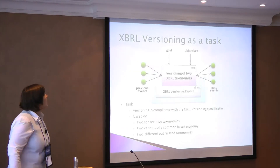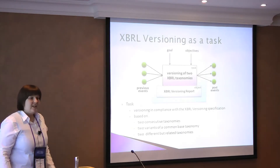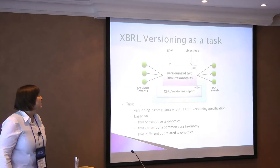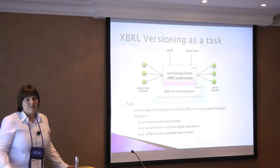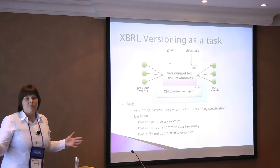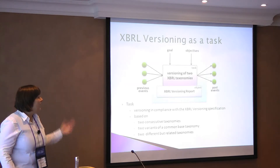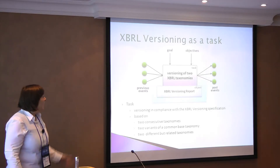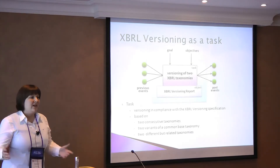From the expert versioning point of view, the task is the versioning of two taxonomy versions in compliance with the versioning specification. It can be based on two consecutive versions — a specific version and a next version of these taxonomies — or on two variants of the same base taxonomy. For example, in the European Eurofiling project, we have 10 to 14 variants of the core taxonomy dealing with national discretions, and with versioning we can identify similarities. Or we can use versioning on two different taxonomies that may be related, for example US GAAP versus IFRS.